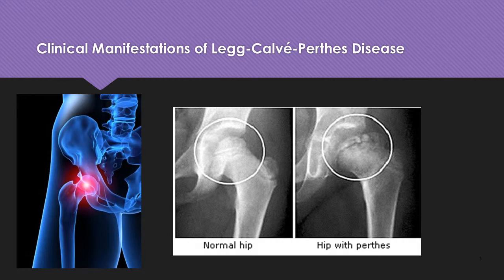Look at Box 48-7 on page 1554 of your textbook. After resolution, the femoral head may be normal or have severe alteration.